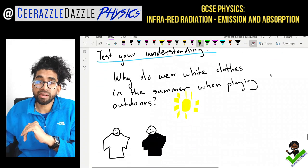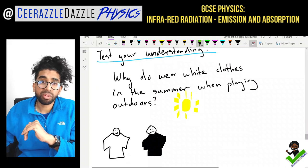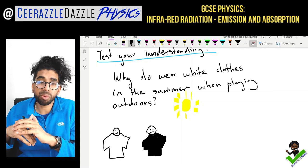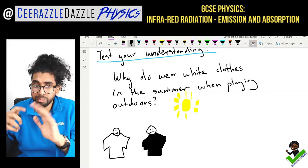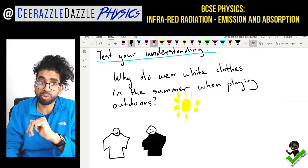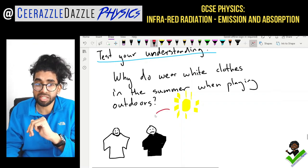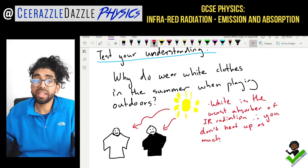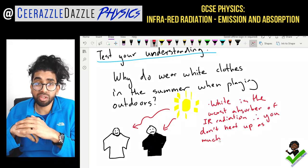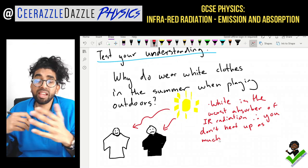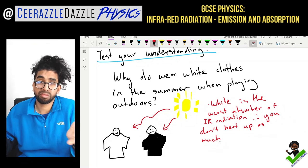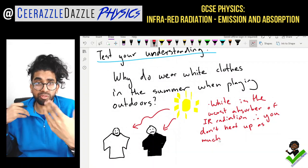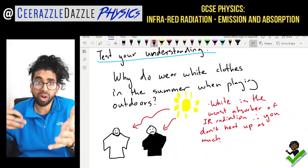Let's test our understanding. Why do we wear white clothes in the summer when playing outdoors? Think about it in terms of absorption. White is the worst absorber of infrared radiation, so if you absorb the least amount of heat, you don't heat up as much. If you wore black, you'd absorb the most and you'd feel hotter. That's the reason why you wear white clothes in the summer.